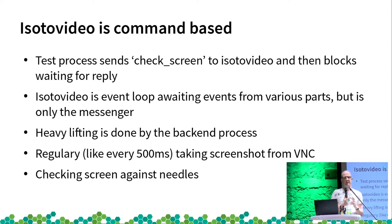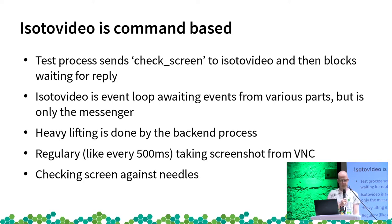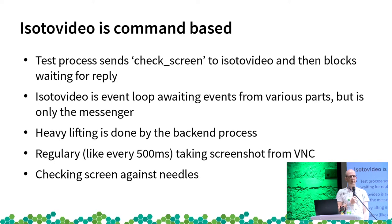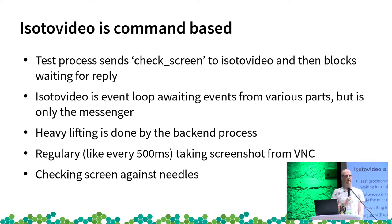The actual grabbing of the screen from VNC, checking the needles database, and the needle comparison — all this happens in the backend process. The backend process also has to take care that we grab a screenshot regularly from VNC and pipe it into the video, so that we later have a continuously regular video where every frame is also repeated a number of times.